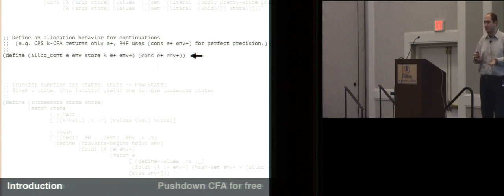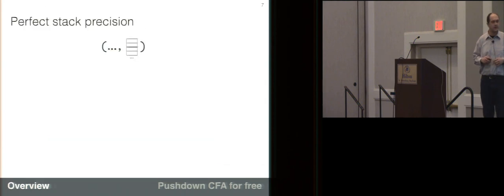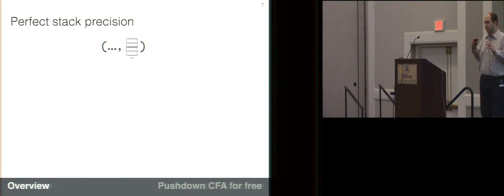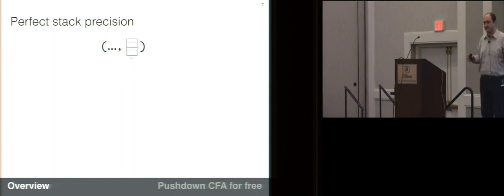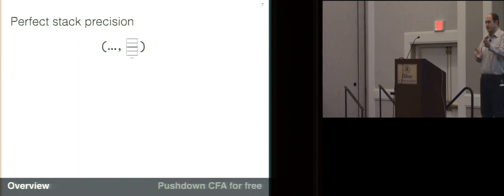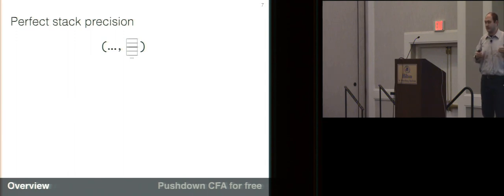The bulk of our paper explores how and why this works and how it ended up being so simple. More specifically, we describe a technique for static analysis which gives a guarantee of perfect stack precision — no loss of precision with regard to the structure of the stack, which stack frames might sit on top of which other stack frames. Even if the information inside a stack frame is approximate, we still permit no loss of precision in the structure of the stack, which stack frames can return to which other stack frames.